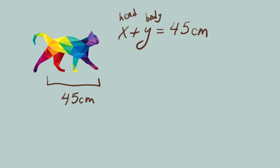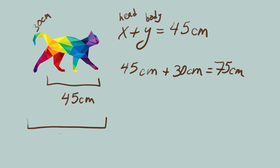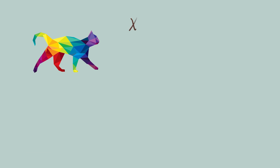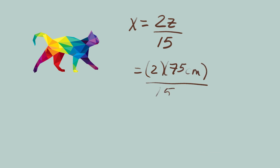We can add that to the tail to get the whole length. 45cm plus 30cm equals z, the whole length of Oliver. Oliver is 75cm long. Now let's use the next expression: x equals 2z divided by 15. x equals 2 times 75 divided by 15. x equals 150 divided by 15, equals 10cm.